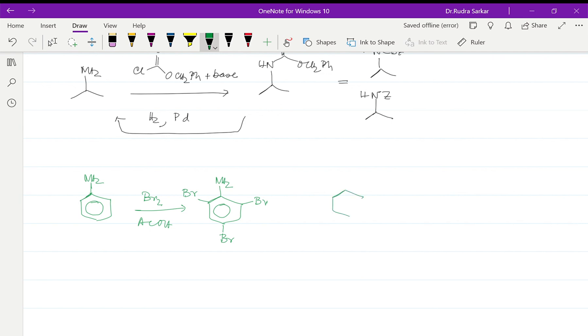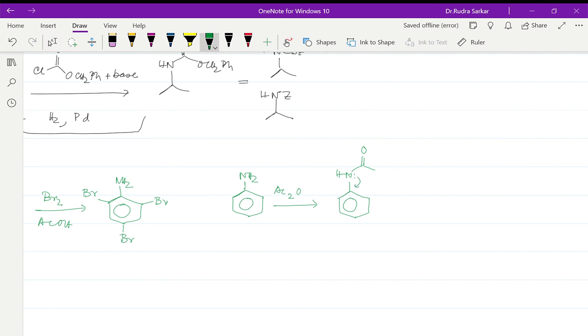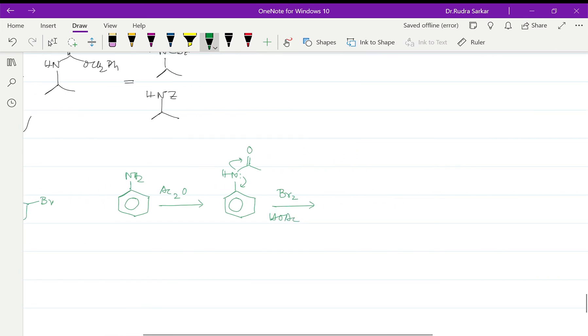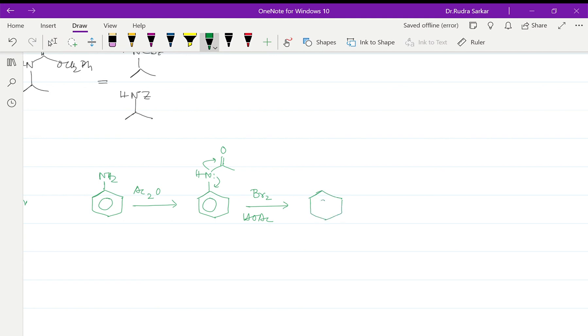However, if we were to protect the aniline using acetic anhydride, when aniline NH2 is free, it is a powerful electron-donating group. However, when you acetylate the aniline and synthesize acetanilide, this becomes a moderately activating group because the lone pair cannot be completely given to the benzene ring as it is also shared with the acyl group.